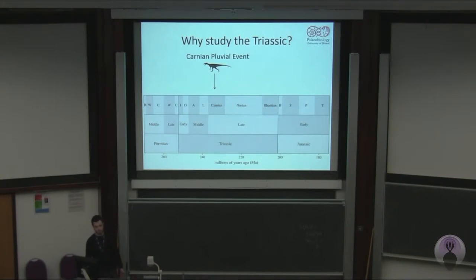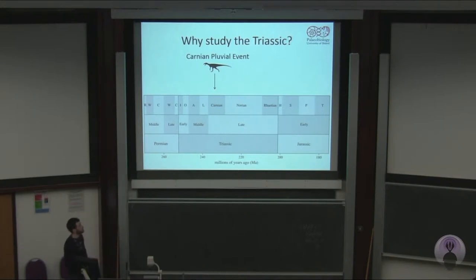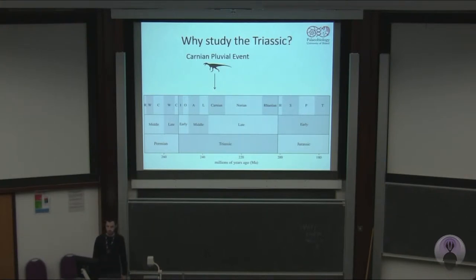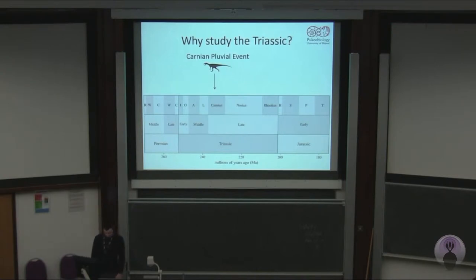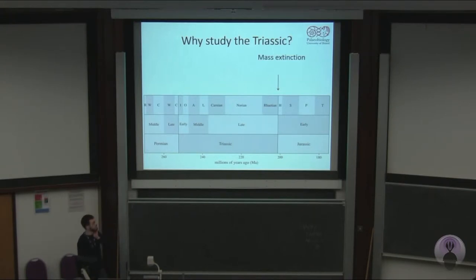Synapsids, which dominated during the Permian, give way to diapsid-dominated faunas. We see the origination of several key groups such as dinosaurs, which appear during the Carnian — around the same time as the Carnian Pluvial Event, which I'll mention later. Throughout the rest of the Triassic, other groups also appear, such as very early mammals, amphibians, squamates, and several others. The Triassic also ends in mass extinction, giving way to the classic dinosaur-dominated ecosystems of the Jurassic and then the Cretaceous.